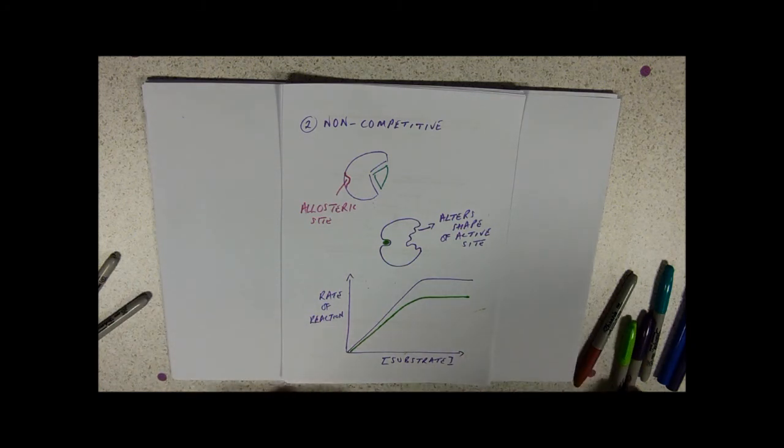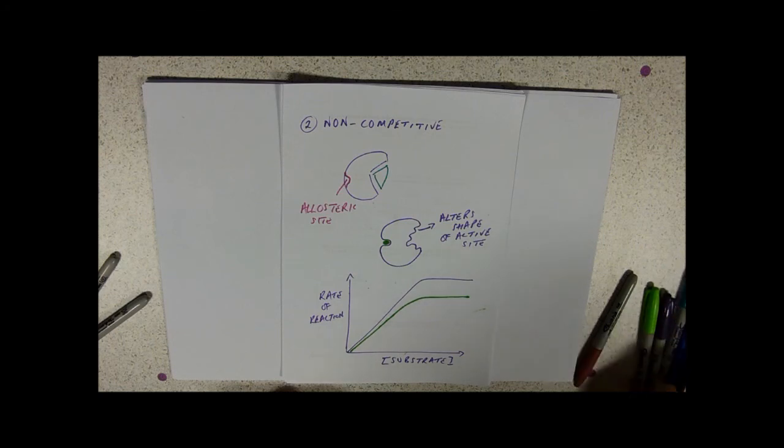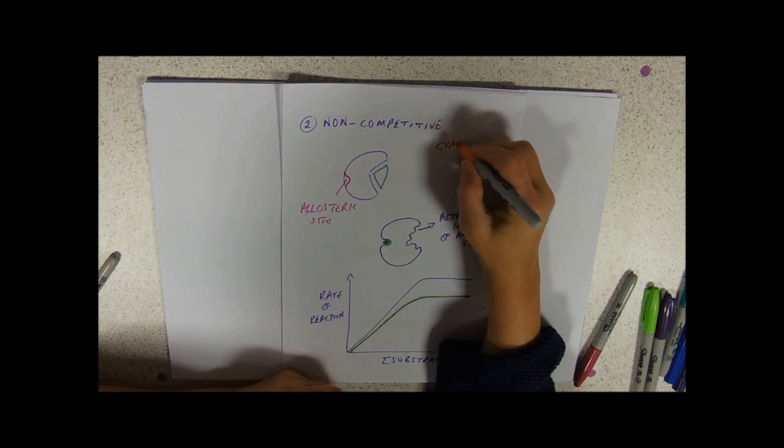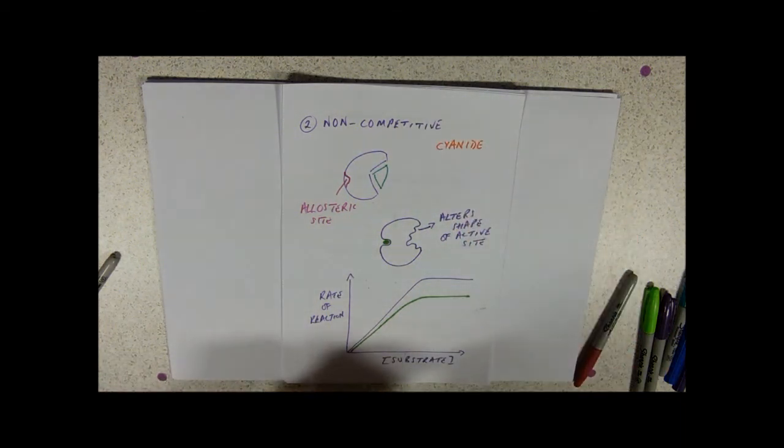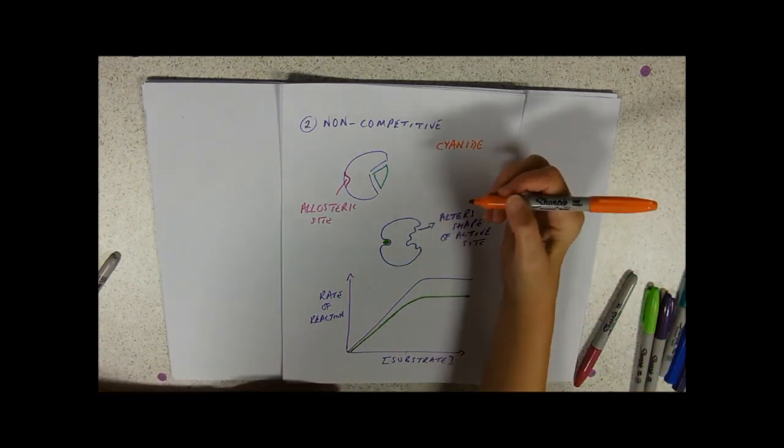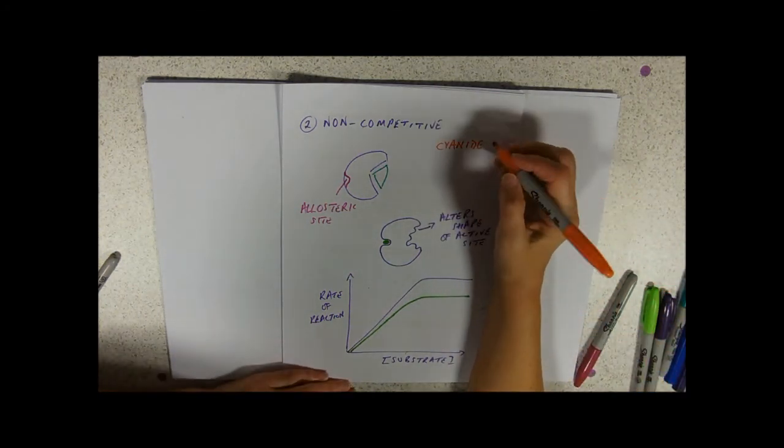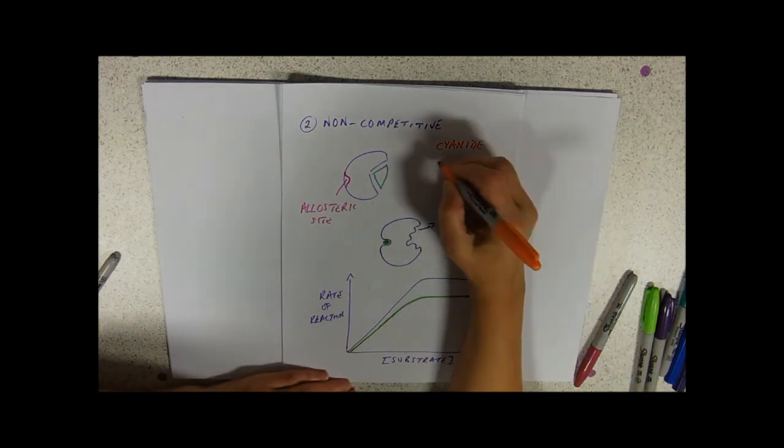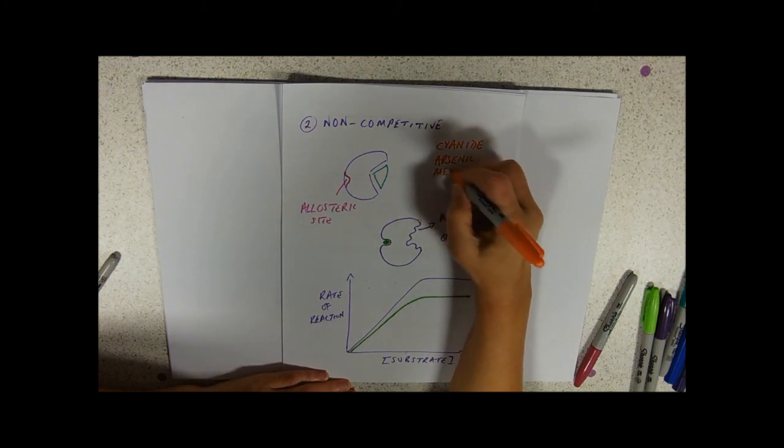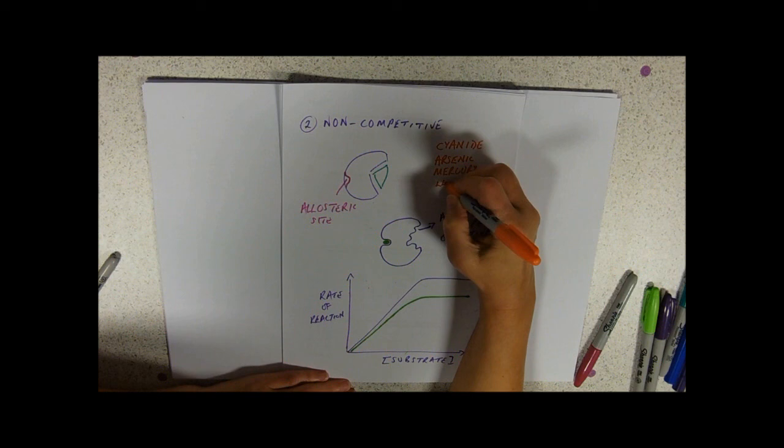So things that work like that. So there are various things that we've actually heard of. We've heard of cyanide, which affects one of the enzymes in respiration in the electron transport chain. Arsenic, mercury, and lead.